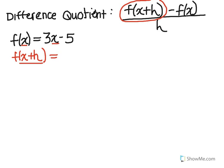We're going to replace the x instead with x plus h. And then we can simplify it. So here we've got 3x plus 3h minus 5.